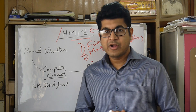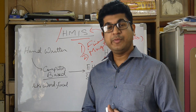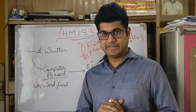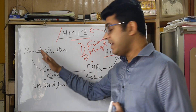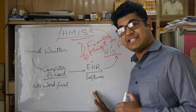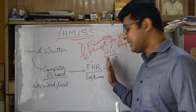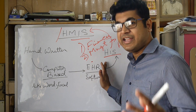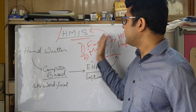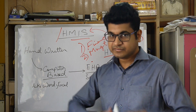To recap: Hospital Management Information System is hospital information combined with the integration of IT into that system. It started from handwritten, went on to computer-based, then to EHR which only had electronic health records and not the management information system. After EHR it went to HIS, which had information systems for various patients as well as management-related issues, and from HIS it went to HMIS — or ERP if you are controlling it across various locations.